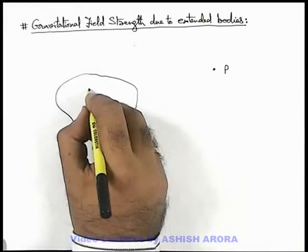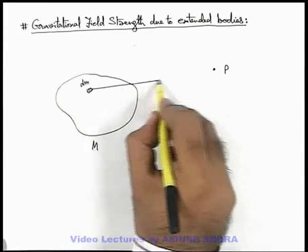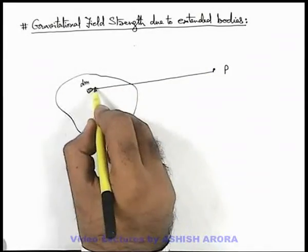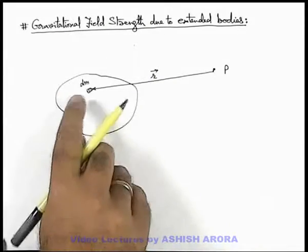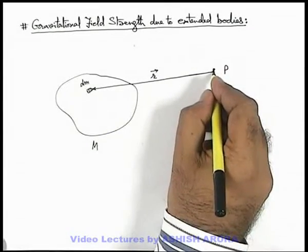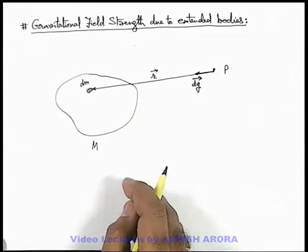Then we can consider an elemental mass dm in it, and say with respect to point p, dm is located at a position vector r. Then due to dm at point p we can say gravitational field dg will exist in direction towards dm.